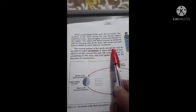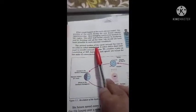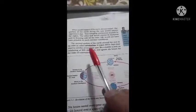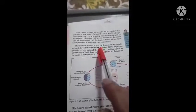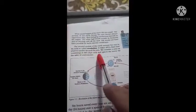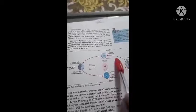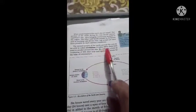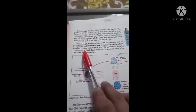Now the second motion of the Earth is around the Sun in its orbit — it's called revolution. अब जो दूसरा motion Earth का है, जो अपने orbit पर चक्कर लगाता है उसको revolution बोलते हैं। It takes 365 and one-fourth days in one year to revolve around the Sun. Sun का एक चक्कर पूरा करने में 365 and one-fourth days लगते हैं।